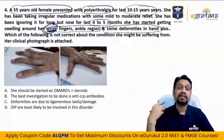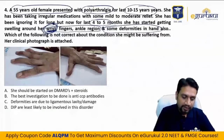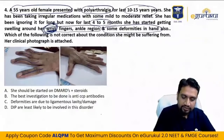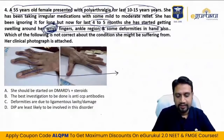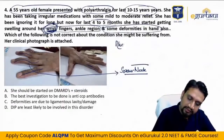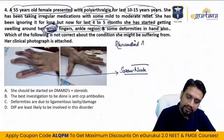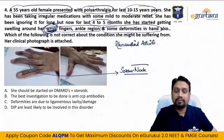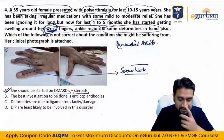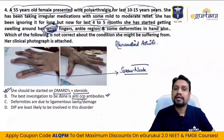Looking at the clinical photograph: PIP appears hyperextended and DIP appears flexed in multiple fingers — what I'm seeing is a swan neck deformity. Swan neck gives a hint that the lady is suffering from rheumatoid arthritis. She should be started on DMARDs and steroids. The best investigation is anti-CCP antibodies.